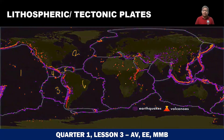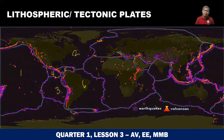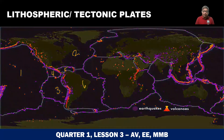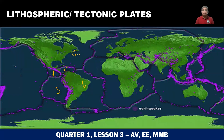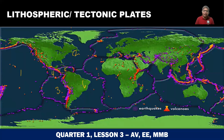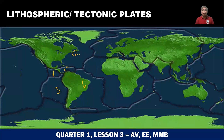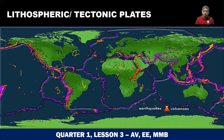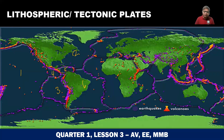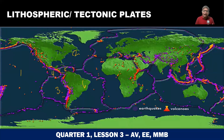Over time, scientists recorded these and plotted them on the map — nilagay nila sa map kung saan usually nare-record yung mga epicenters. And this is the result: on the world map, these purple areas are where epicenters of earthquakes are most frequently recorded. The orange ones are the locations of active volcanoes on Earth. I want you to take a look at this GIF and think: is there a relationship between the locations of the earthquakes and the active volcanoes?